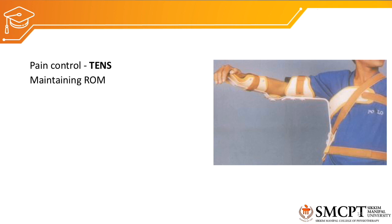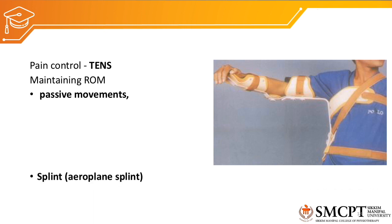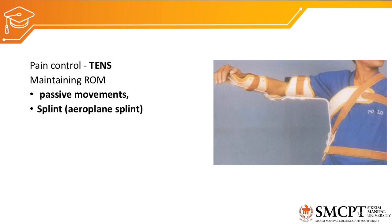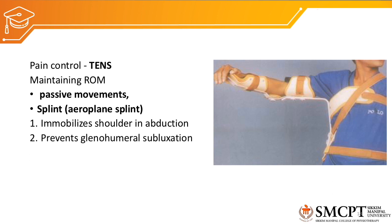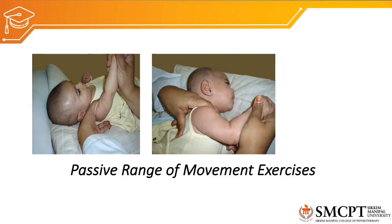For pain control, TENS has shown positive results. For maintaining range of motion, passive movements should be given to the shoulder, elbow, wrist, and all joints of the hand to maintain range and prevent joint stiffness. Splints can be used — the aeroplane splint immobilizes the shoulder in abduction and prevents glenohumeral subluxation. Passive range of motion exercises should be given for both adult and pediatric patients, mobilizing all joints of the upper limb to prevent adhesions.